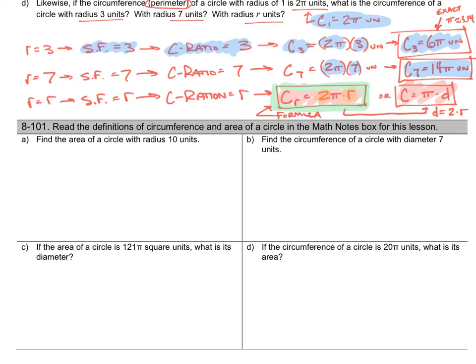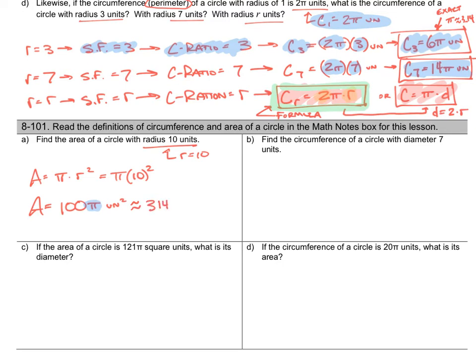Let's jump into the practice problems. Find the area of a circle with a radius of 10 units. Area equals pi times radius squared — pi times 10 squared. Ten squared is 100, so the exact answer is 100 pi square units. The approximate answer, substituting 3.14 for pi, is 314 square units. Pi goes on forever without repeating, so your calculator can't show an exact decimal for pi — leaving pi in the answer gives the exact value.